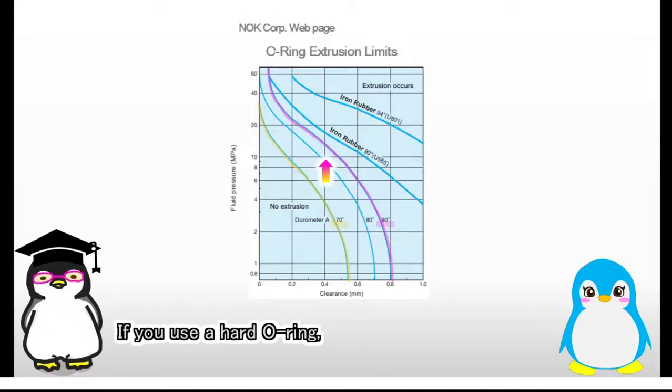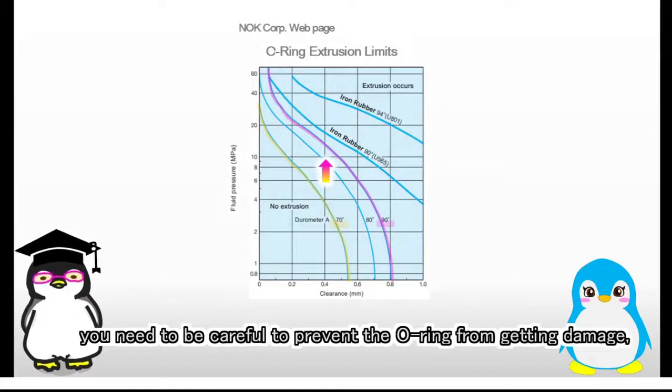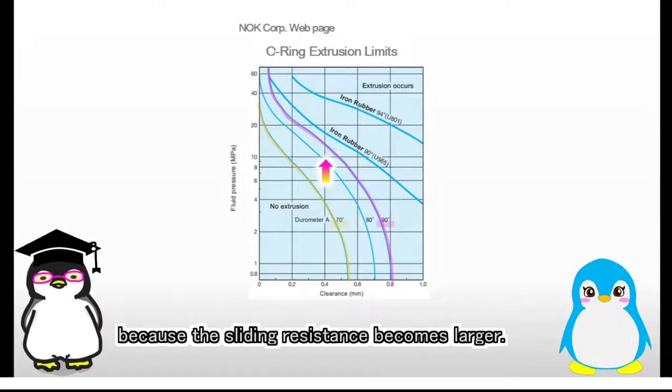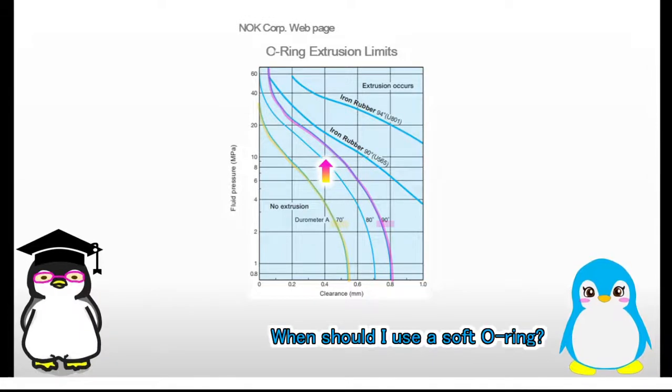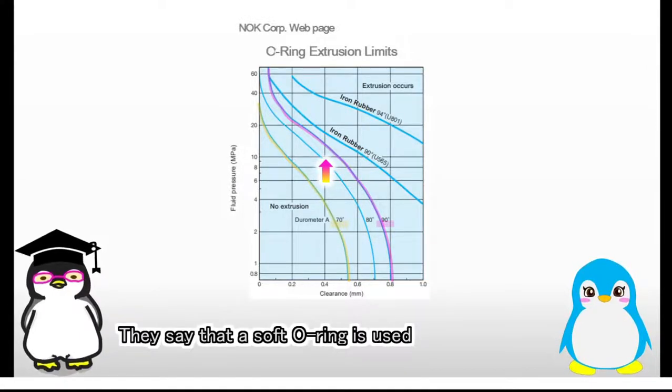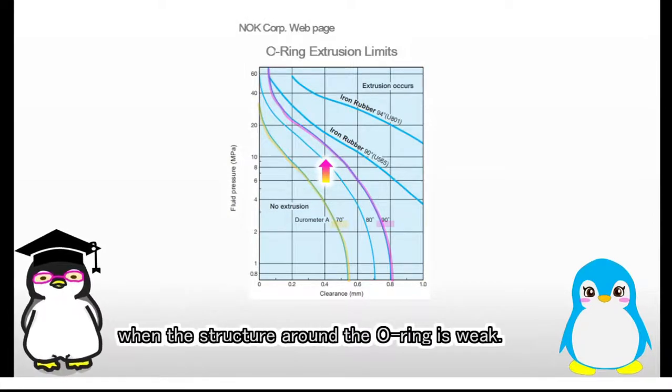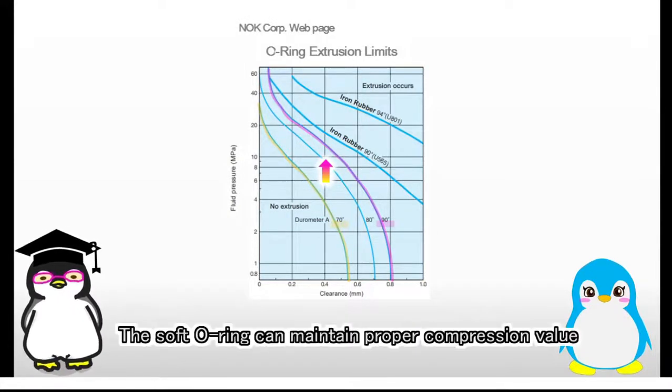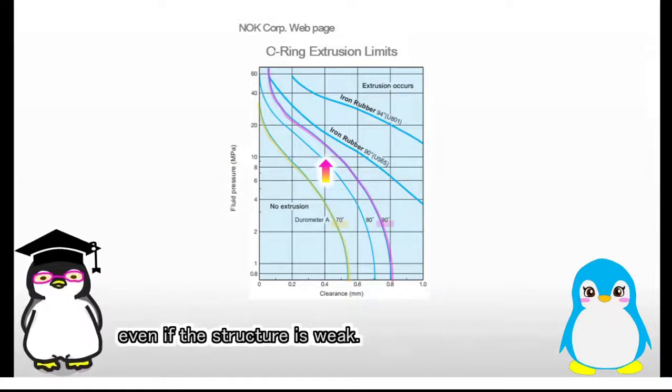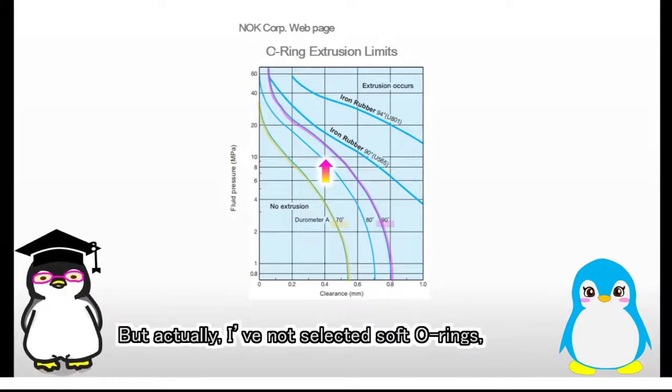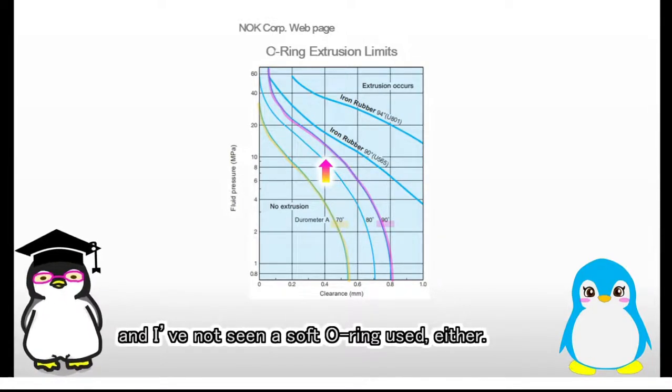If you use a hard O-ring, you need to be careful to prevent the O-ring from getting damage, because the sliding resistance becomes larger. When should I use a soft O-ring? They say that a soft O-ring is used when the structure around the O-ring is weak. The soft O-ring can maintain proper compression value, even if the structure is weak. But actually I've not selected soft O-rings, and I've not seen a soft O-ring used either.